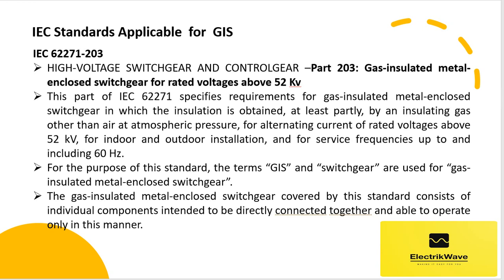IEC 62271-203: High Voltage Switchgear and Control Gear, Part 203, Gas Insulated Metal Enclosed Switchgear for Rated Voltages Above 52 kV. This part of IEC 62271 specifies requirements for gas-insulated metal-enclosed switchgear in which the insulation is obtained, at least partly, by an insulating gas other than air at atmospheric pressure, for alternating current of rated voltages above 52 kV, for indoor and outdoor installation, and for service frequencies up to and including 60 Hz. For the purpose of this standard, the terms GIS and Switchgear are used for gas-insulated metal-enclosed switchgear. The gas-insulated metal-enclosed switchgear covered by this standard consists of individual components intended to be directly connected together and able to operate only in this manner.